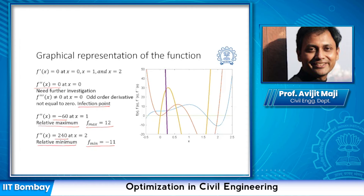Looking at the graphical representation, the blue line indicates the objective function and the red line indicates the first order derivative. We can identify three points where the first order derivative is zero: at x = 0, x = 1, and x = 2. These are the points where the slope is zero, indicating potential optimum points or inflection points.